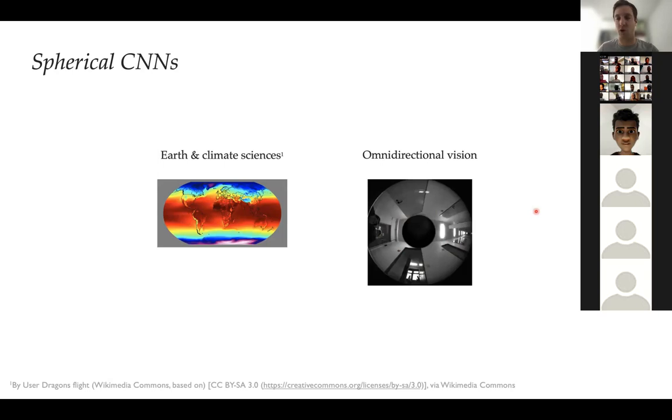One sub-area getting very large is spherical CNNs. Spherical signals arise in many domains: earth and climate sciences, omnidirectional vision, cosmology, and other scientific domains. If you simply project the sphere to the plane and apply a planar CNN, that doesn't work because features are represented very differently depending on where they are — there's a large amount of distortion. You want a CNN that works intrinsically on the sphere and is equivariant to rotational symmetries.